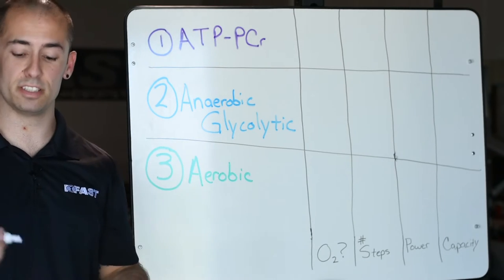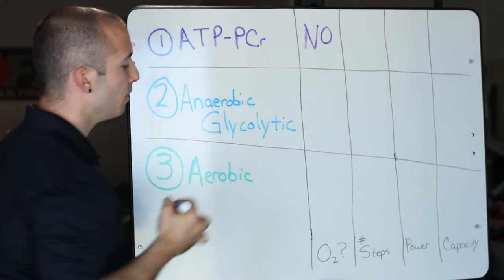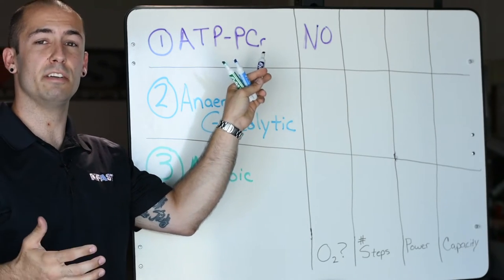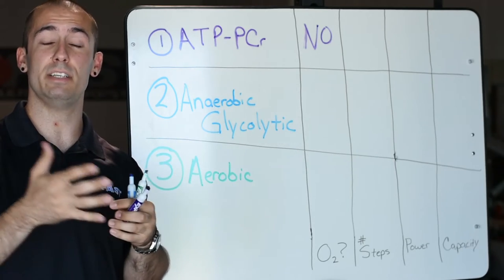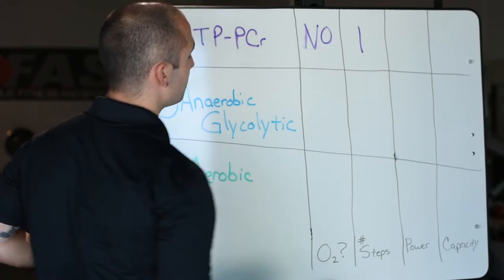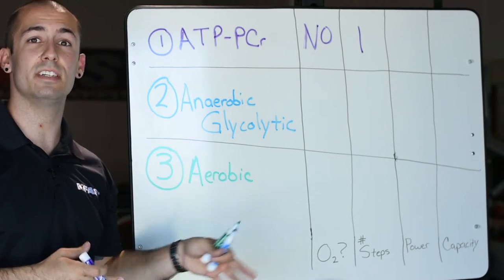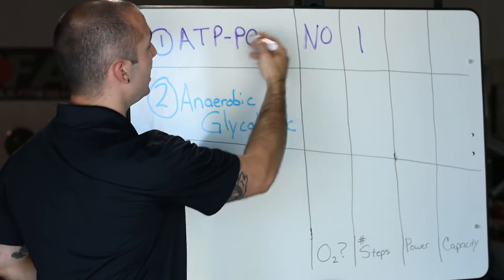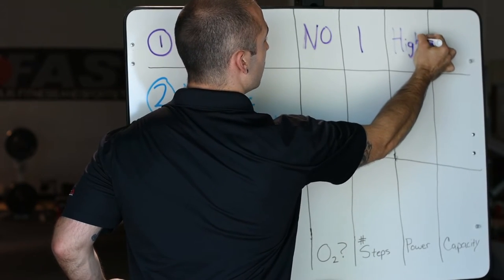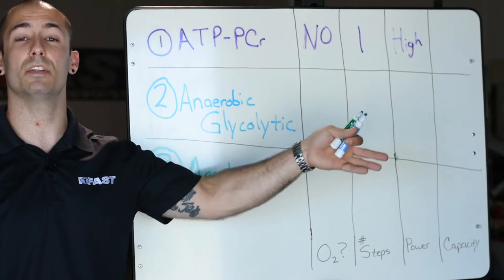So our ATP-PCR system is considered anaerobic, so it does not use oxygen. The number of steps, it's literally one step. This phosphocreatine or creatine phosphate gives away its phosphate molecule to an ADP, and we get another ATP right away. So it's one step, it's quick, fast, done in a hurry. Power - we're talking about how much ATP can each system give us, how quickly. So our power for our ATP-PCR system, since it's one step, has a very high power. And then our capacity, we kind of get this trade-off between power and capacity. So anytime we see a high power, we're going to have a low capacity.